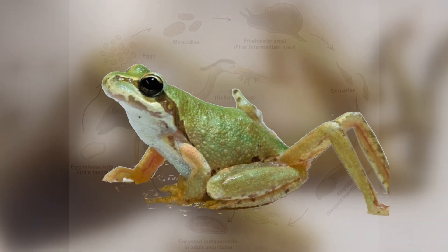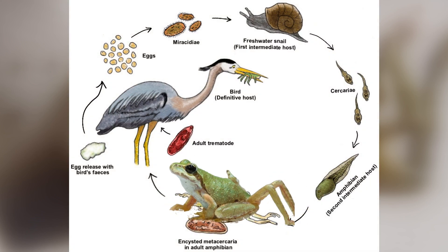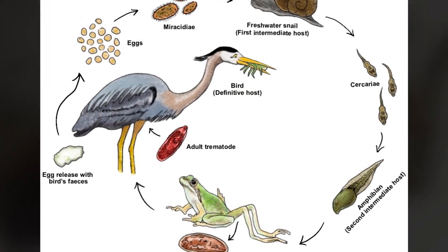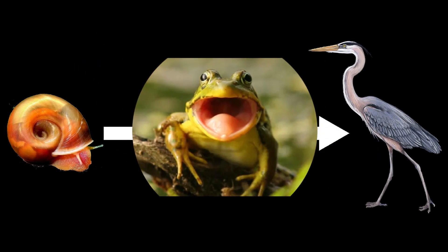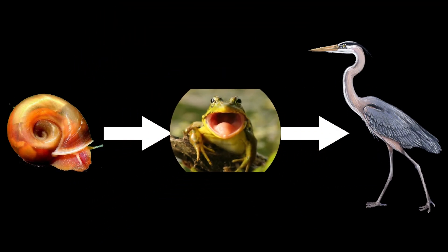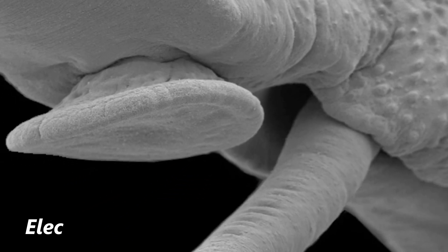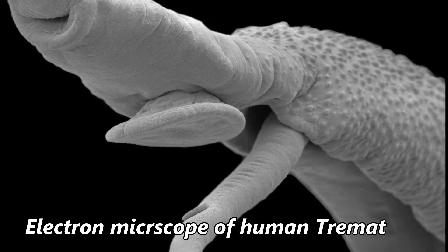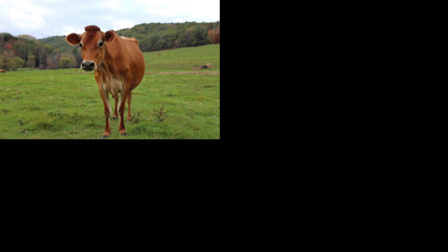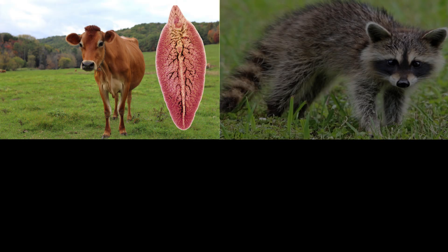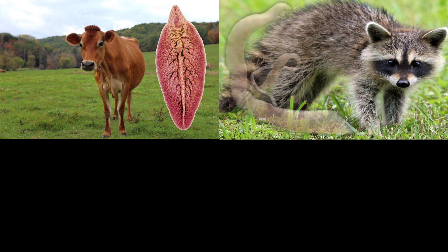As I have established, Ribeiroia ondatrae is a parasite that infects frogs. However, frogs represent more of an in-between step for this parasite. This parasite is a flatworm from the class Trematoda, also commonly called the flukes. There are thousands of fluke parasites around the world, each specializing in infecting different types of animals, and all of these trematodes tend to be highly specific, only infecting a few different species.